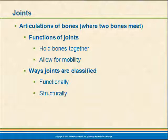Joints may have a couple of functions. First, they hold bones together — the bones in the skull are multiple bones held completely immobile. Other joints allow for a degree of mobility. We classify joints by function or structure, and the functional and structural classification names go kind of hand in hand.